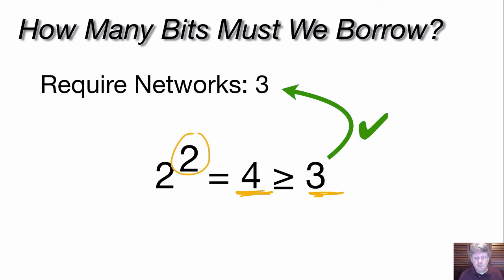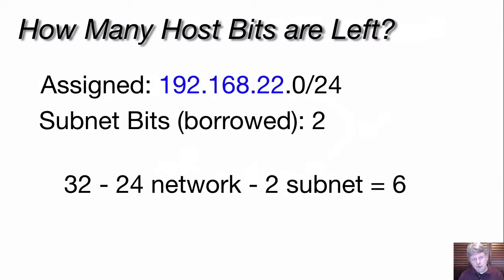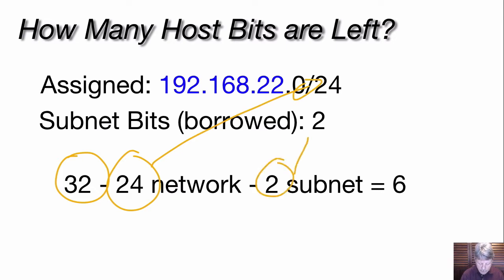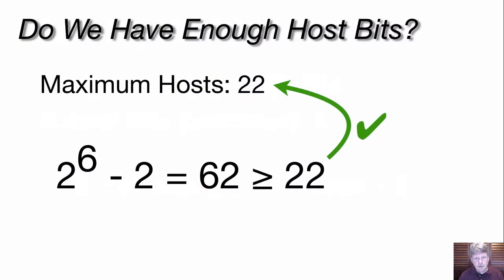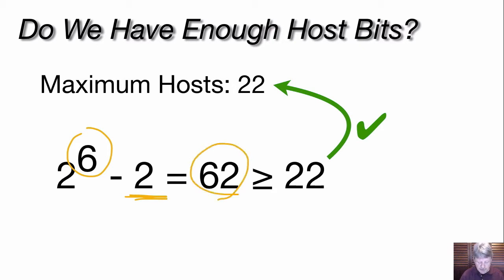The math is pretty easy — all you have to do is remember how to multiply by two. Now the question is, how many host bits do we have left? If we start with our 32, subtract the 24 assigned network bits, and subtract the two we've borrowed, that leaves us with six. With those six bits, do we have enough to support the largest network? We take two raised to the power of six, which gives us 64, minus two — because all zeros represents the network and all ones represents broadcast — leaving us with 62 valid hosts, which is greater than the 22 we need.